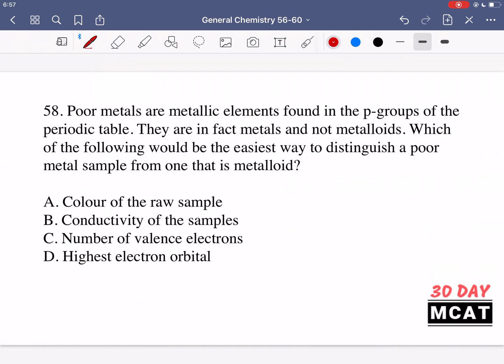In question 58 it says poor metals are metallic elements found in the p groups of the periodic table. They are in fact metals and not metalloids. Which of the following would be the easiest way to distinguish a poor metal sample from one that is metalloid? Poor metals are actually metallic elements but they're in the p group which is near where we have some metalloids.